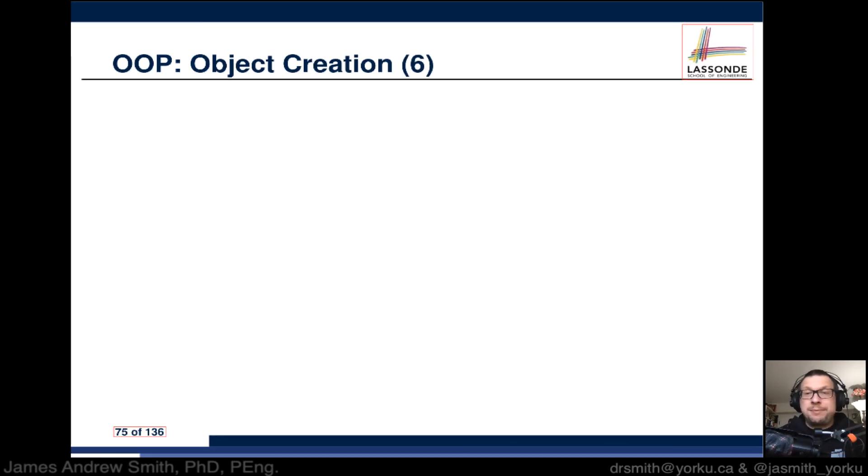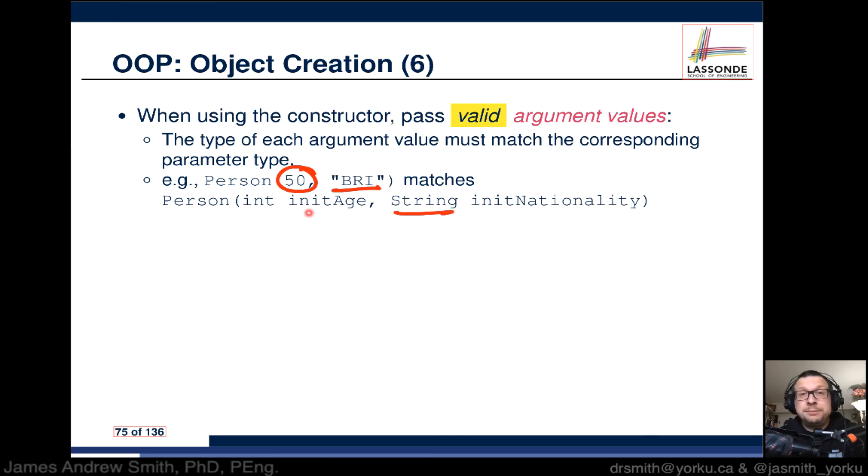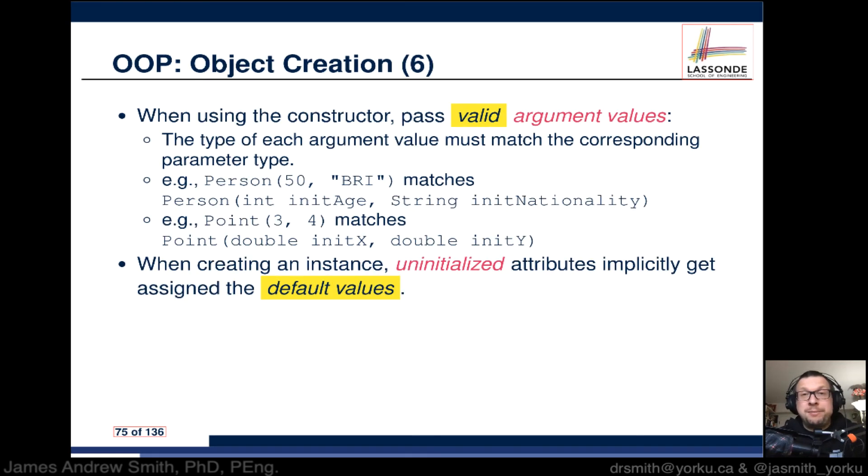When using the constructor, we want to make sure that we pass valid argument values. The type of each argument—is it a string, an integer, is it a double precision floating point?—must match the corresponding parameter type. So we have to have an integer for age, a string for nationality. If we do Point 3 and 4, that matches that we want numbers in the two input argument positions.